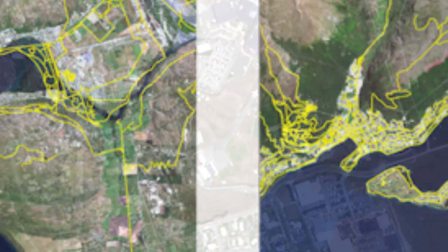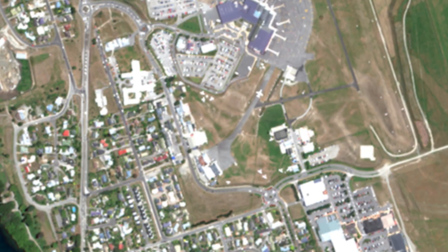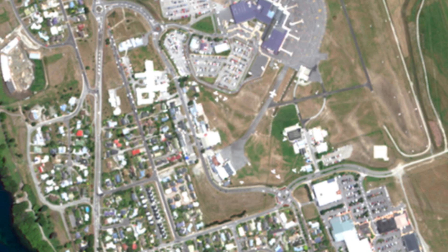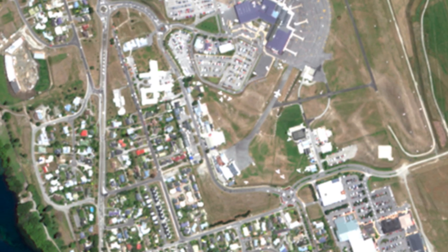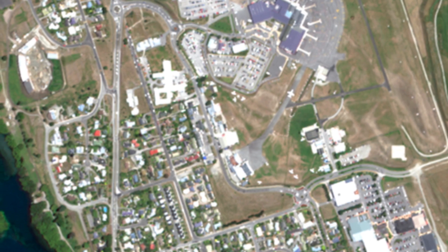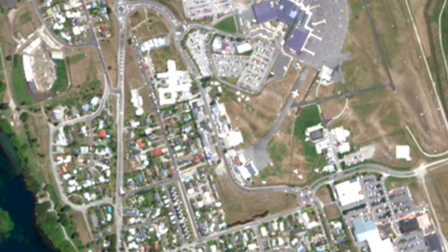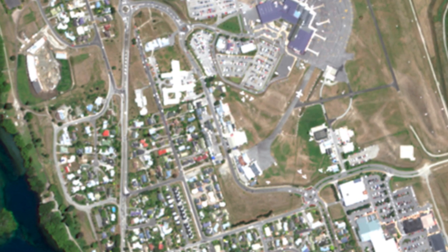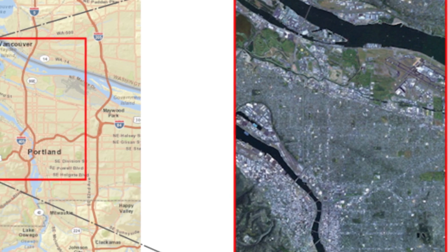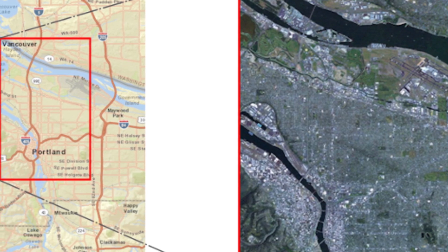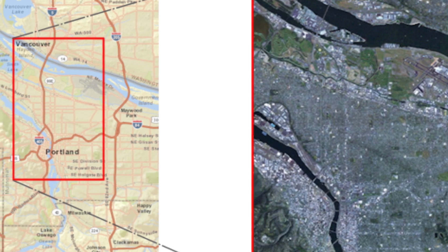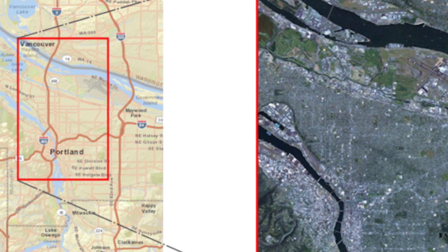These anomalies may cause scale changes over the image, irregularities in the angular relationships between the image elements, and displacement of objects in the image. ArcGIS provides solutions, including georeferencing and orthorectification, to perform geometric corrections and create a product that is map accurate.